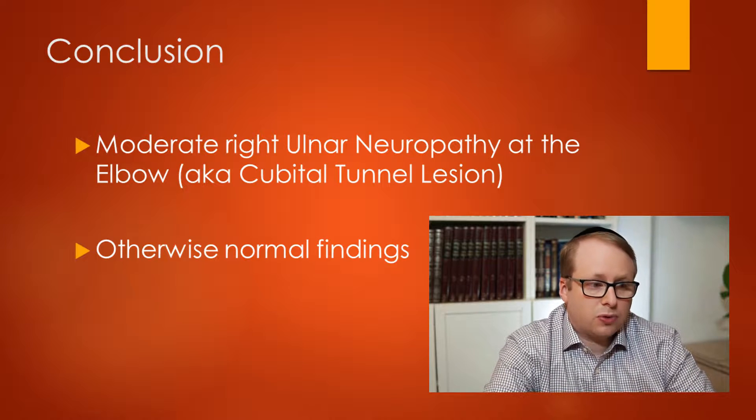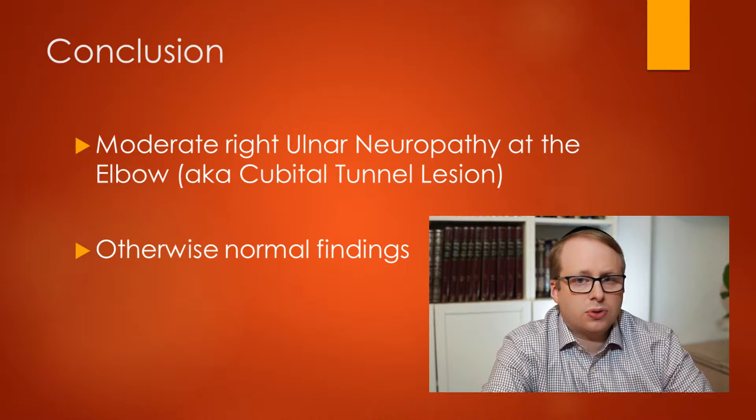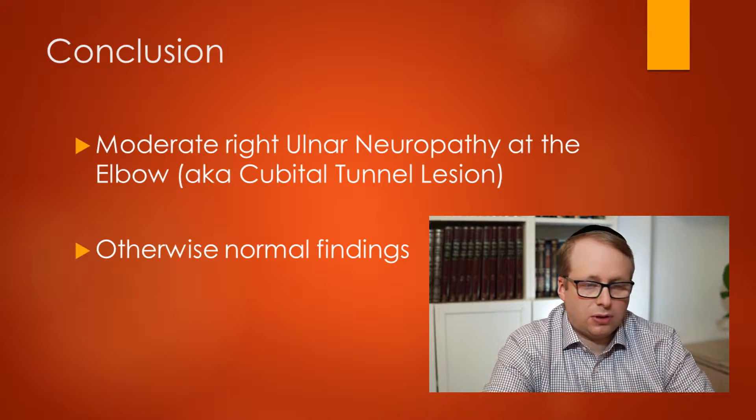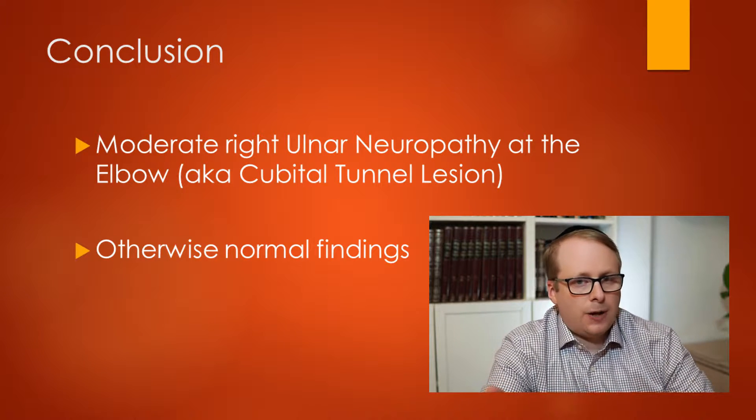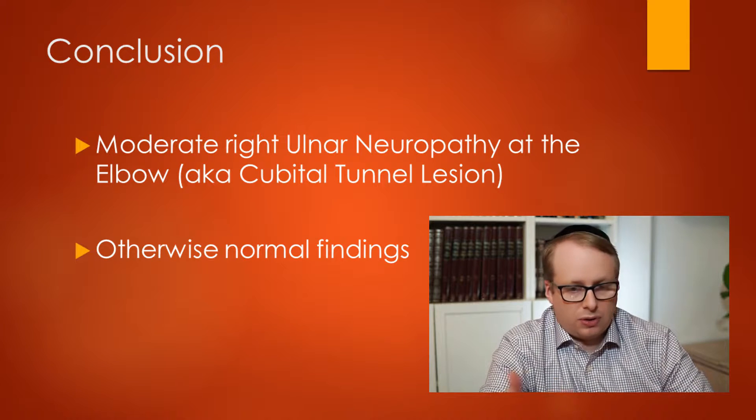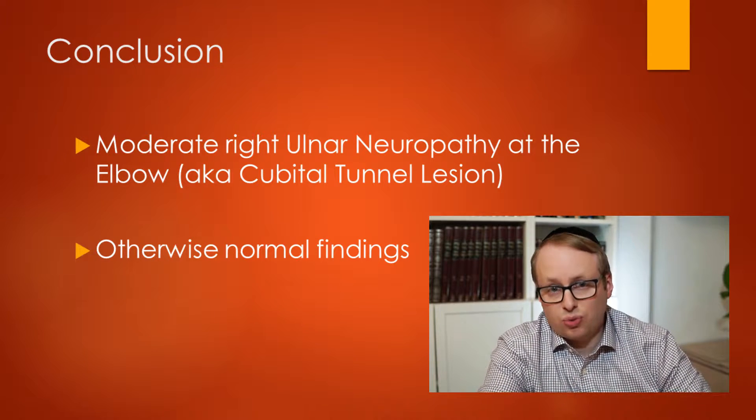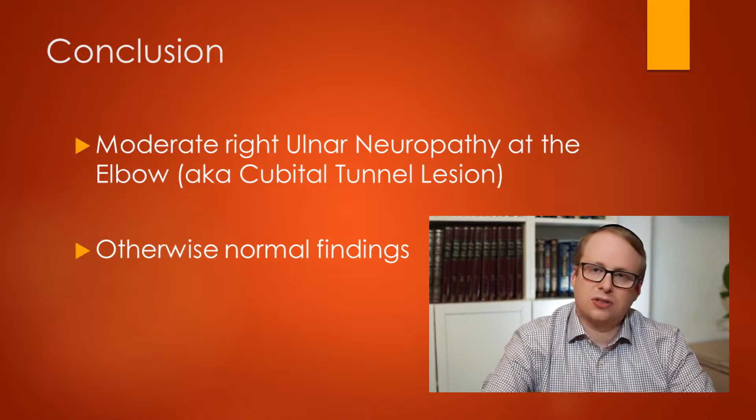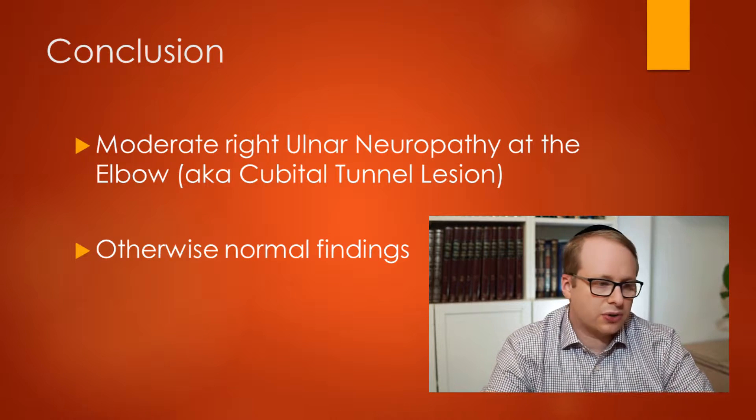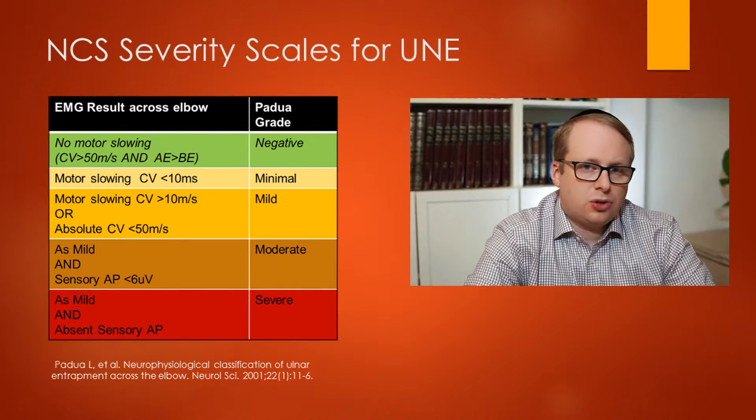And in conclusion, we've got a moderate right-sided ulnar neuropathy. We also can call this a cubital tunnel lesion as well. People like to call it by different names, ulnar neuropathy at the elbow, cubital tunnel lesions. Personally, I think it can be a little bit confusing for a busy clinician if you present them with language which could be misinterpreted or misread as a carpal tunnel lesion, as a cubital tunnel lesion. It sounds pretty similar if you're in a busy clinic. So I personally prefer the term ulnar neuropathy at the elbow, and otherwise normal findings.